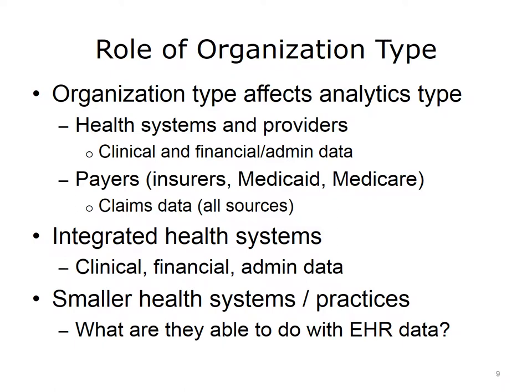Integrated health systems — which often have the health professionals, the hospitals, the clinics, and frequently the payers integrated together — might have all the sources together and can do more. Kaiser Permanente is one of the largest integrated delivery systems in the United States and can perform highly complex planning and decision-making analytics by combining data. Some payers acquire this data and offer services related to it, as their business model depends on predictive models for future utilization. Independent practices, however, may truly struggle to get data out of the EHR and have few people with informatics experience to work with the data.